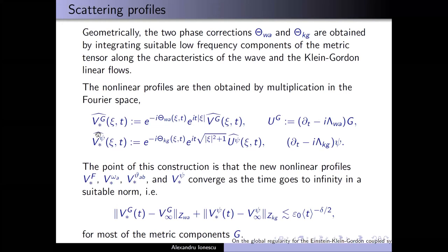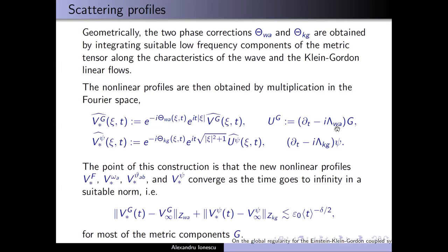The phase correction depends on the metric at all intermediate times — it cannot be prescribed just by knowing the initial data. There is a similar correction for the Klein-Gordon phase: for every fixed xi, we integrate the metric components along the characteristics of the Klein-Gordon flow rather than the wave flow. These low-frequency components of the metric are very explicit functions. Once we have these phase corrections, we can define the final nonlinear profiles. We have profiles for the metric — not all components of the metric converge, there's one that doesn't — and for the Klein-Gordon field.